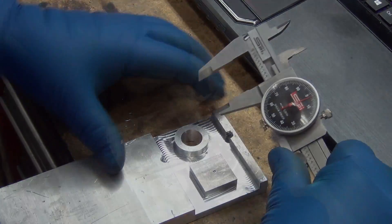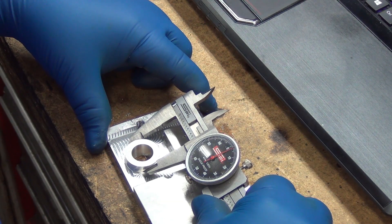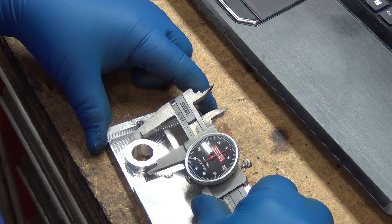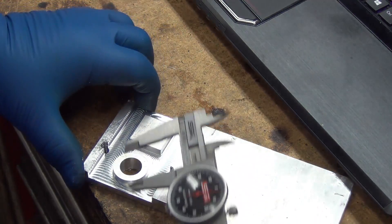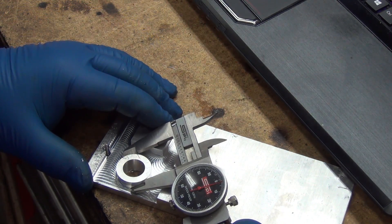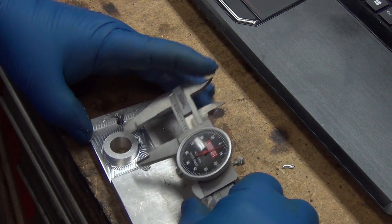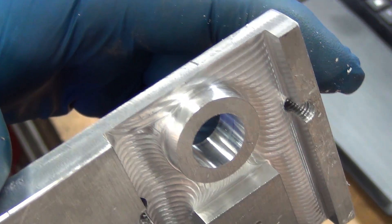2 thousandths over on that, on the x. Now let's see, more like 3. Look at the wall finish on that interior hole.